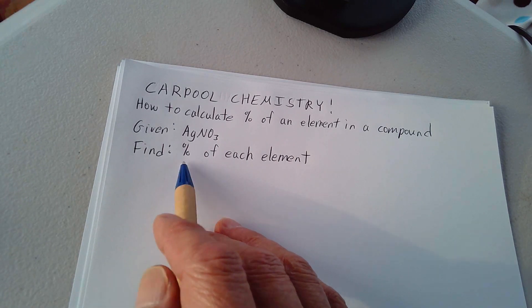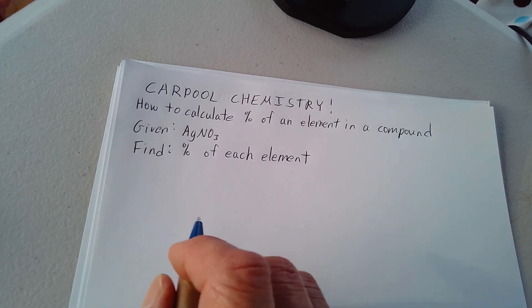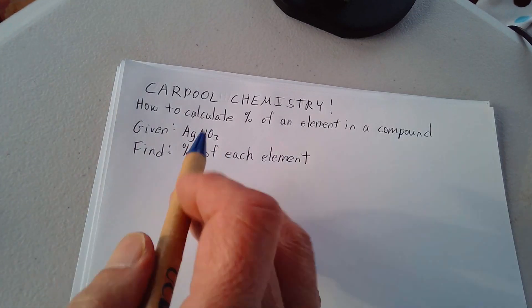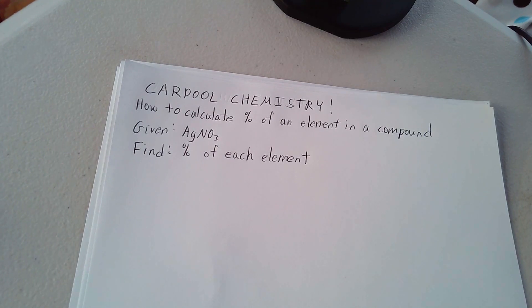And the reason being is that the masses of silver, nitrogen, and oxygen atoms are all different. Silver is much heavier than nitrogen and oxygen, and so it's going to have a larger percentage. Let's take a look at how we figure this out.